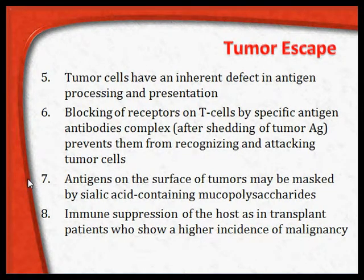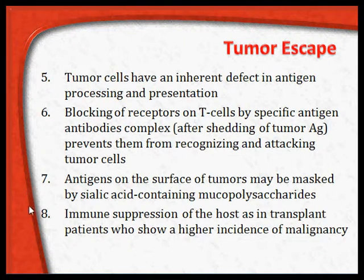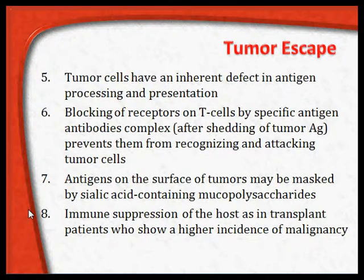Antigens on the surface of tumors may also be masked by sialic acid-containing mucopolysaccharides. Some tumors secrete these mucopolysaccharides, which coat the tumor cell surface so that tumor antigens are not visible to the immune system. Lastly, immune suppression of the host can occur — the tumor itself can produce immunosuppression of the entire immune surveillance mechanism, similar to how immunosuppressive drugs work in transplant patients, resulting in tumor escape.